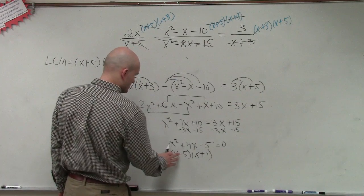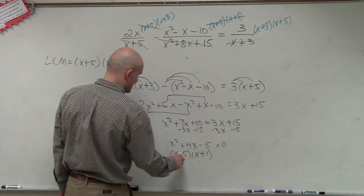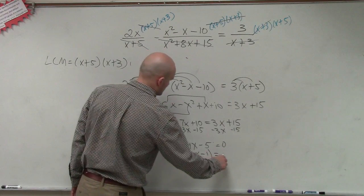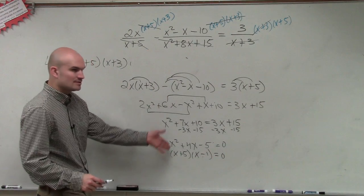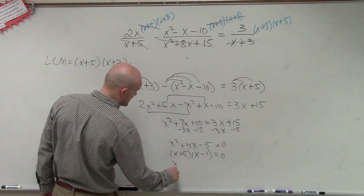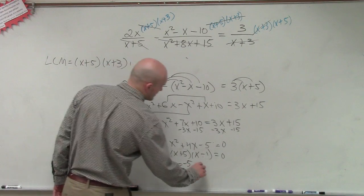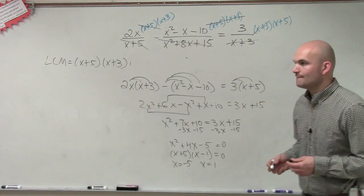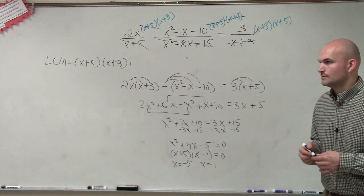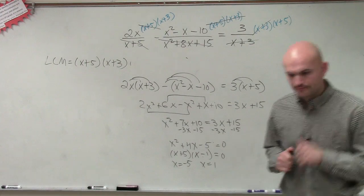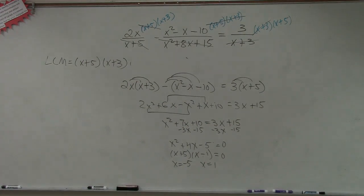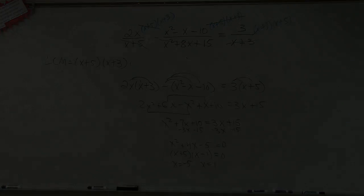So therefore, applying the zero product property, x = −5 and x = 1. Cool? Amazing? Good. That was a six-minute video — a good one!